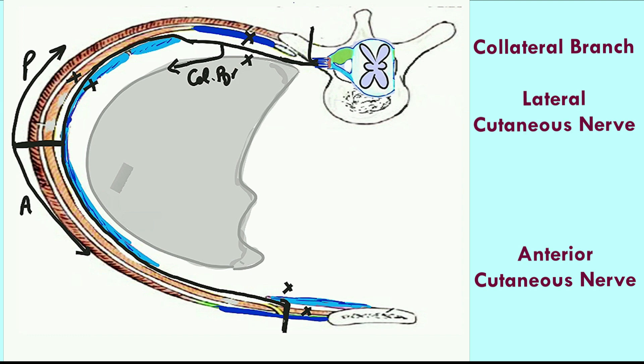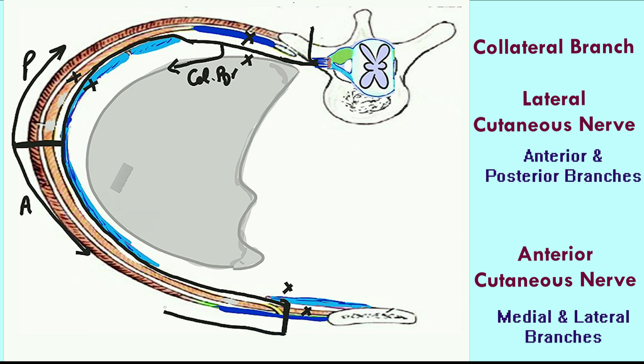Likewise, the anterior cutaneous nerve divides into a lateral branch and a medial branch to supply the skin in that part of the segment. So this is all about the origin, course, termination, and branches of the intercostal nerve.